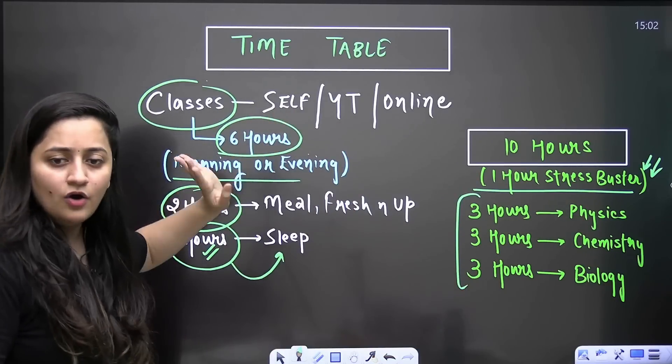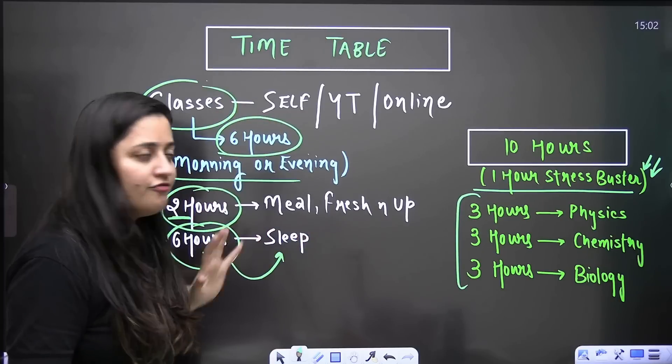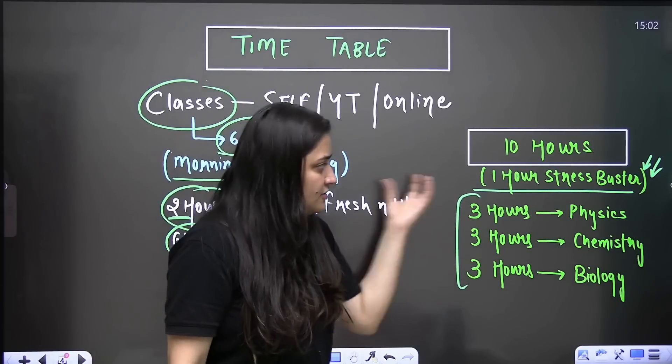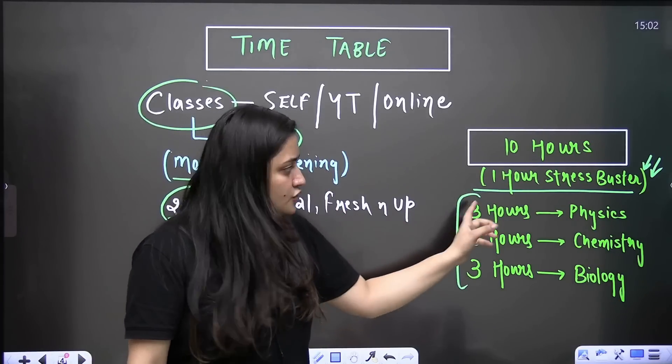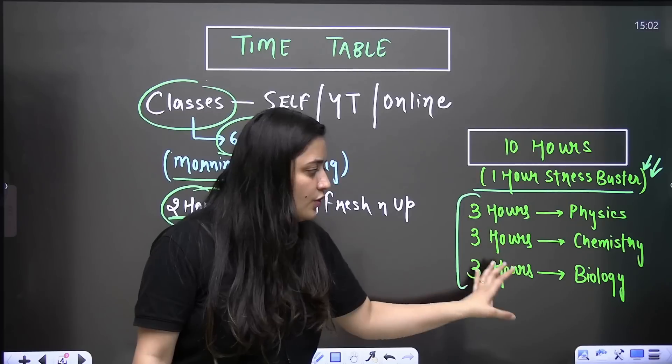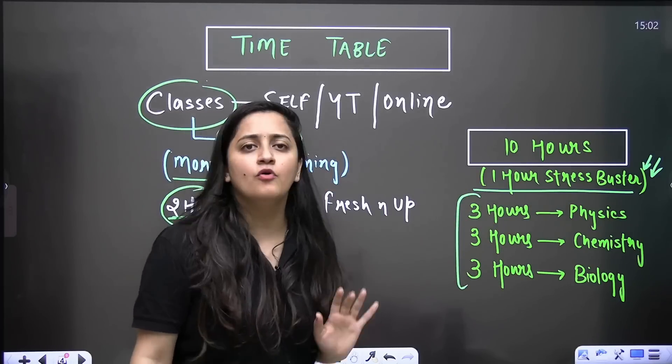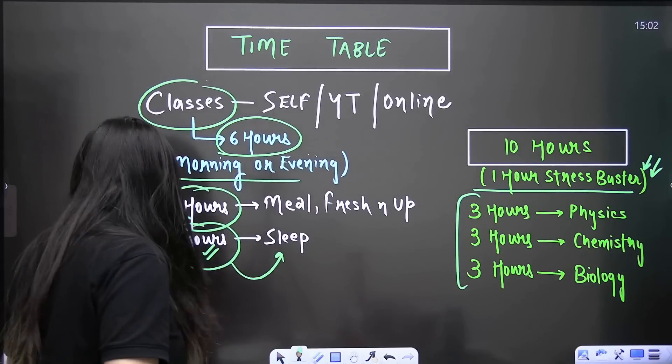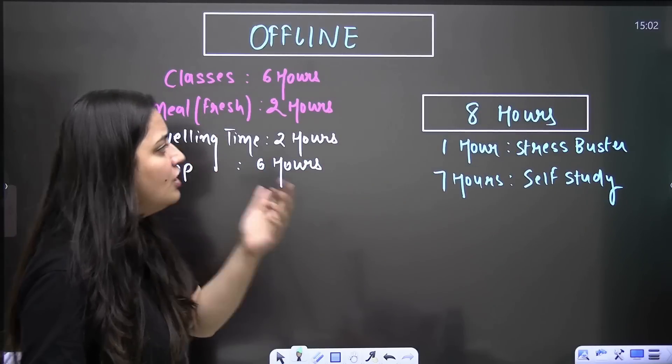So you have nine hours, three hours for physics, three hours for chemistry, three hours for biology. Whether you are attending online classes, YouTube classes, or self-study, you can follow this timetable. You can shift it as per your classes. Let's say one day you want to give two hours to biology, you can give four hours to physics. It is all up to you.